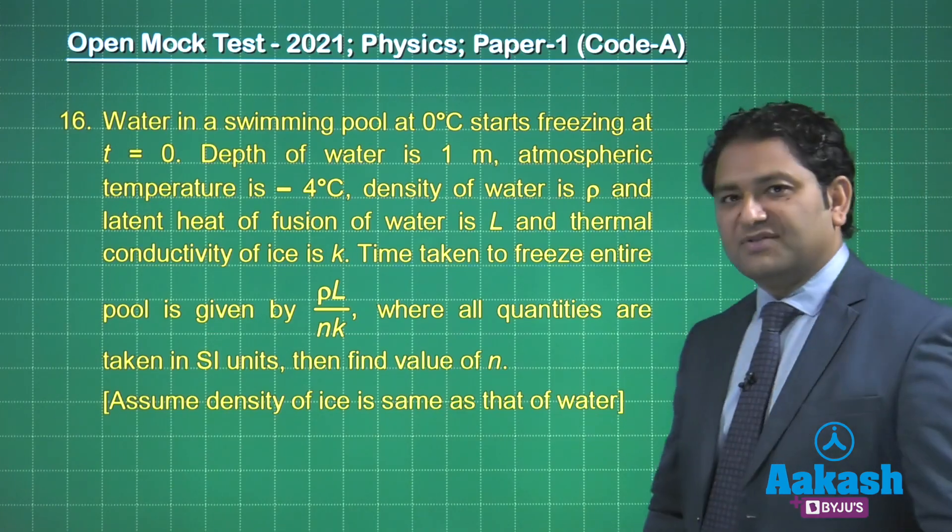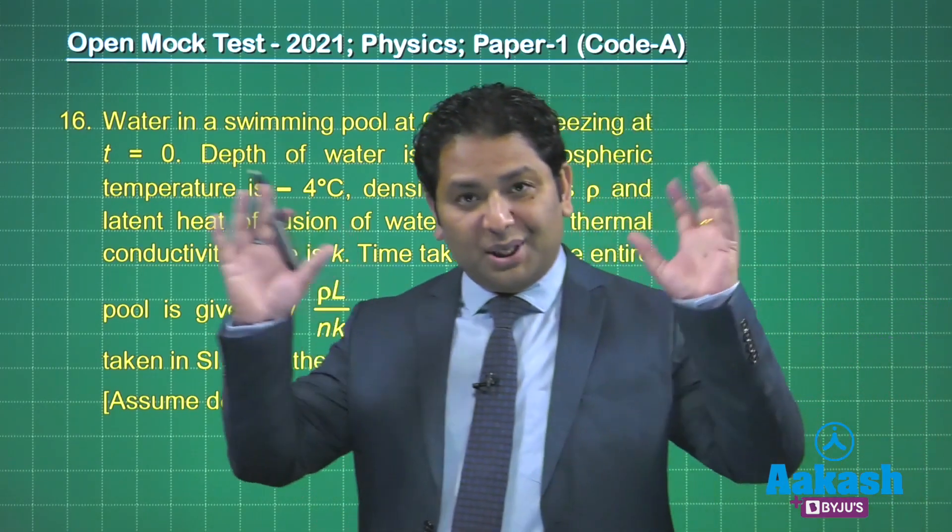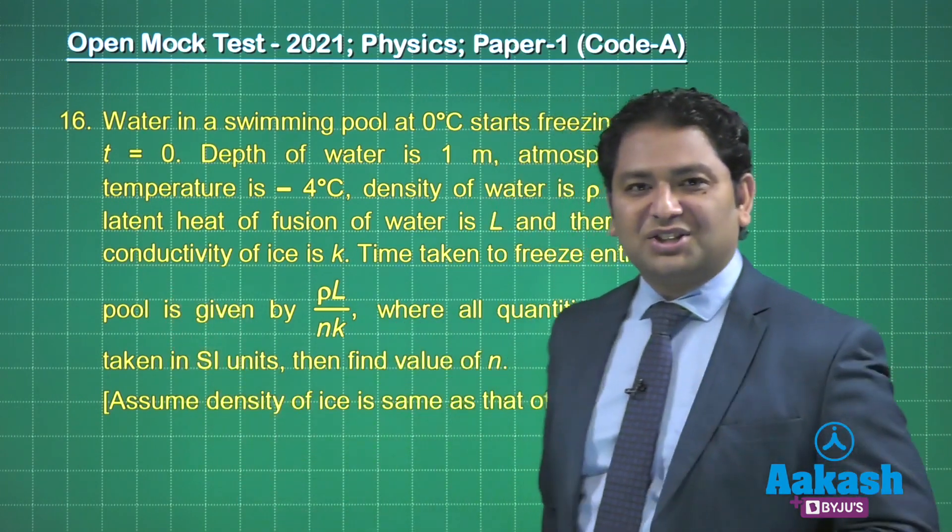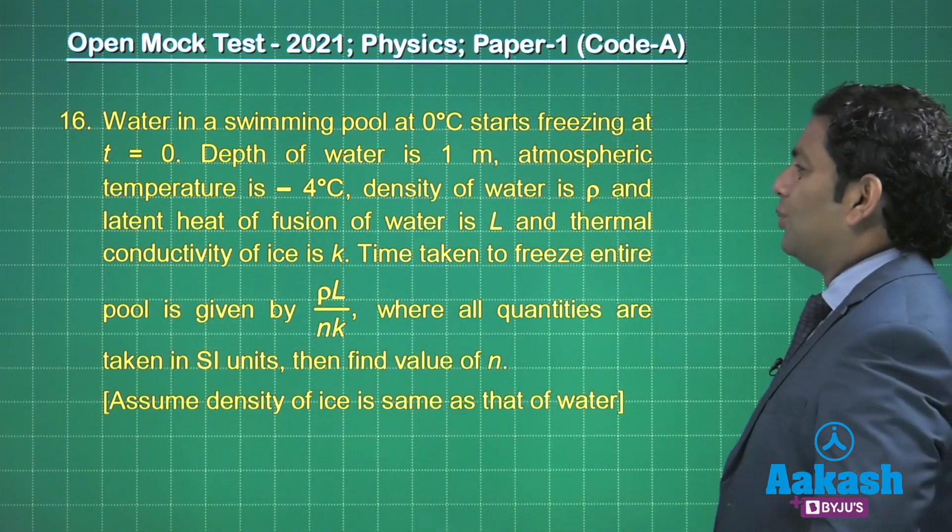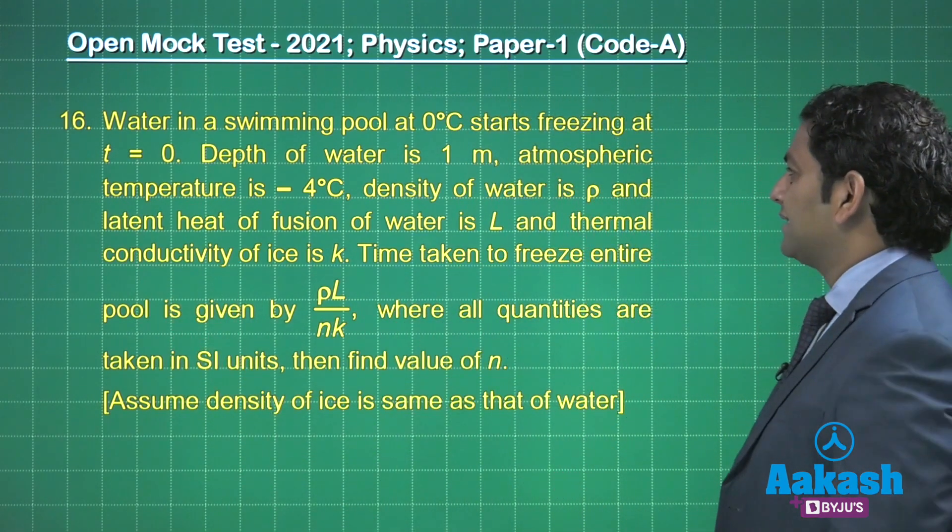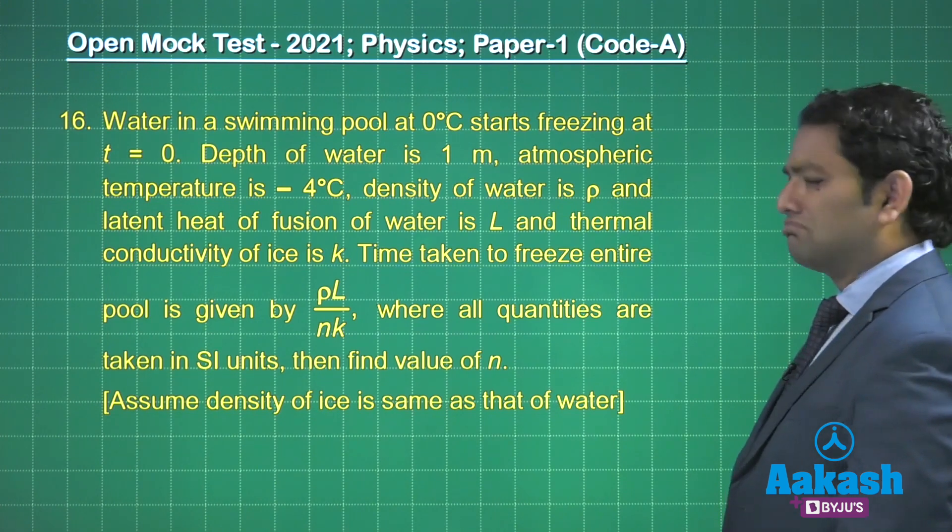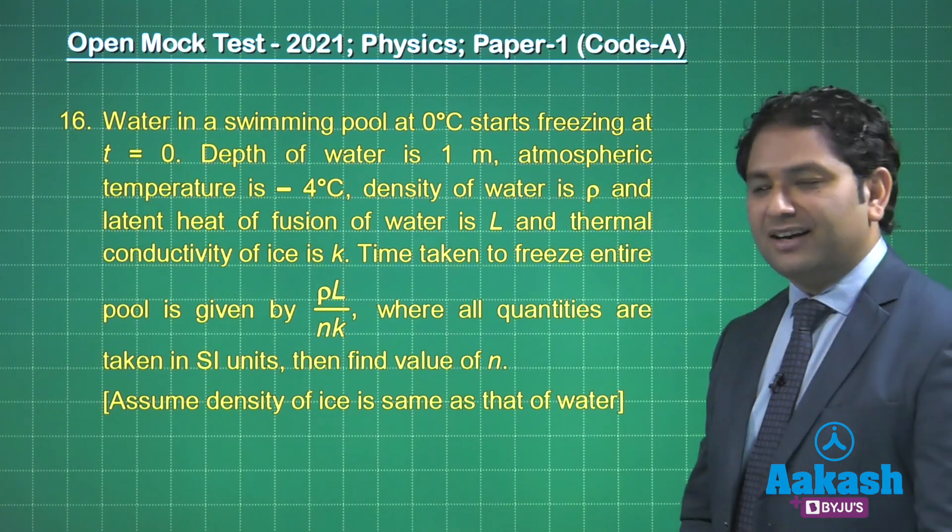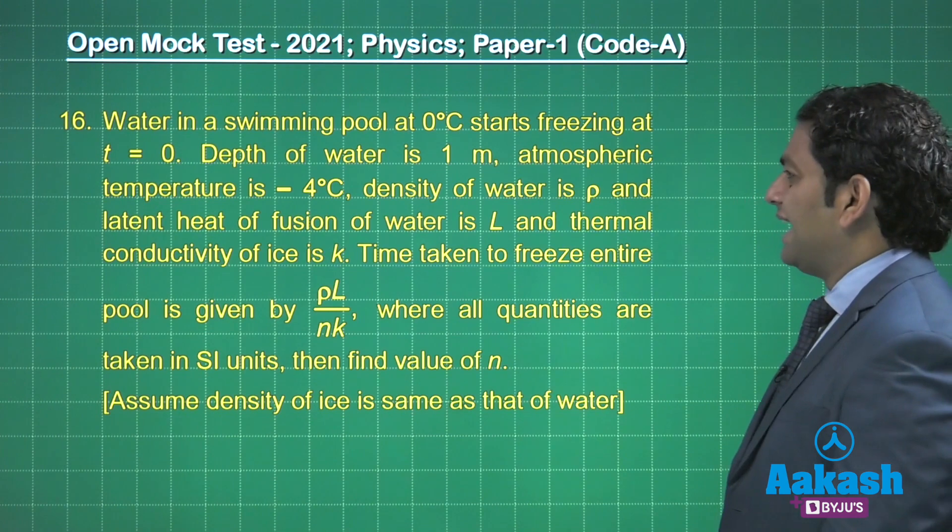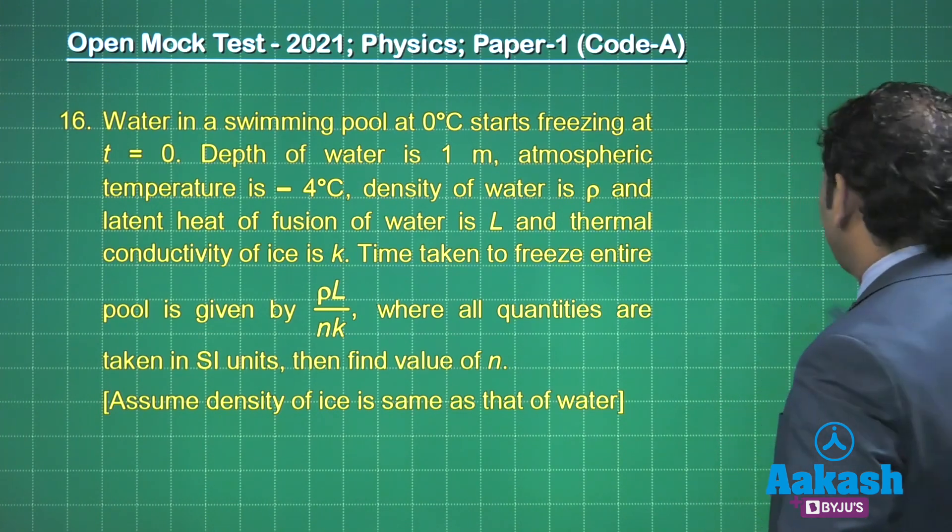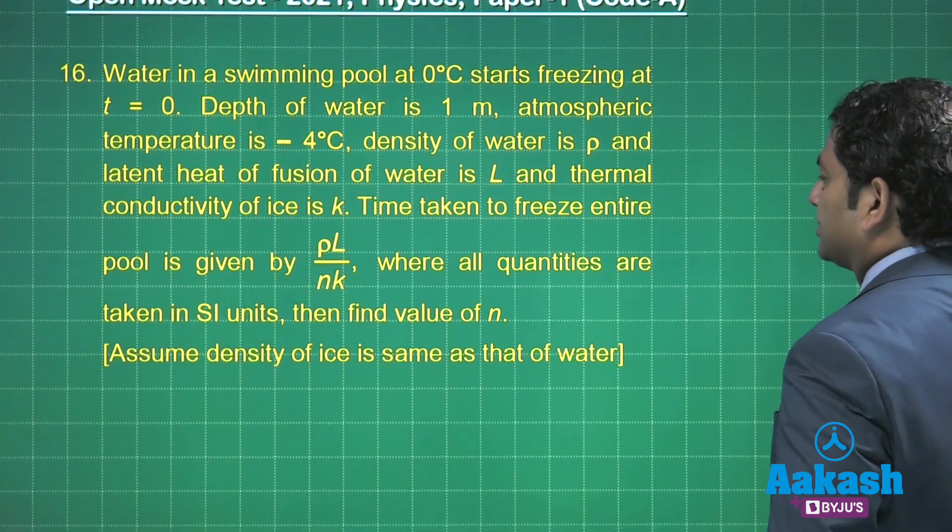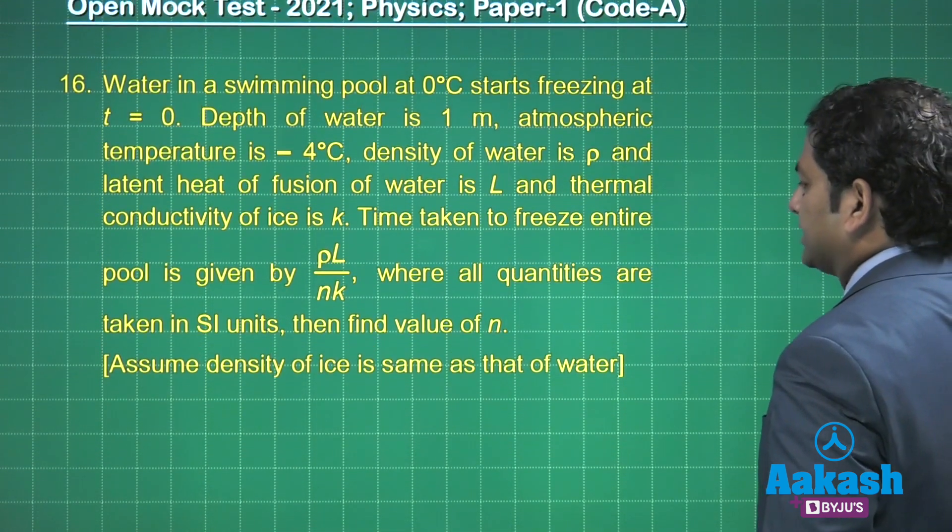Okay, the ice formation. Maybe by this time your brain is heated, so this ice question is really going to be helpful. Water in a swimming pool at zero degree centigrade, probably a swimming pool in Russia, right? Freezing at t equals zero. It begins there. Depth of water is one meter, atmospheric temperature is minus four degrees centigrade.